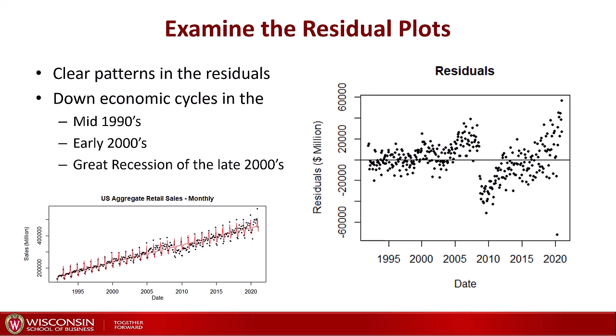We can see that the residuals in the mid-90s are a bit below the zero line, and then they go above, and then they fall again a bit more below in the early 2000s. But these are not large cycles — not large deviations. And then we see an increase around 2005, and a big shock in 2008, where all the residuals fall below the line — they are way below expectations. That's a big downward cycle, which gets corrected in 2010–2015.